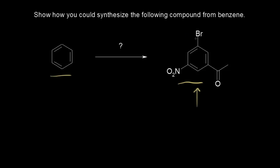If I look at this bromine up here, I know this bromine is an ortho-para-director because it has lone pairs of electrons around it. If I look at the nitro group, I know this is a meta-director because there's a +1 formal charge on that nitrogen. And for this acyl group attached to our ring, this is also a meta-director because this carbonyl carbon is partially positive.